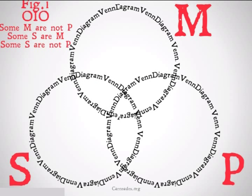Finally, Figure 1, O-I-O. Some M are not P. Some S are M. Therefore, some S are not P. For the first statement, we're going to put it on the line between the areas shared by S and M and the area of M alone. For the second statement, we're going to put it on the line between the areas shared by S and M and the areas shared by S, P, and M.